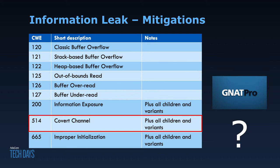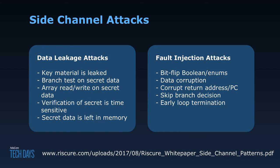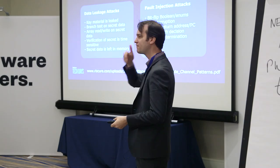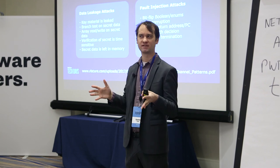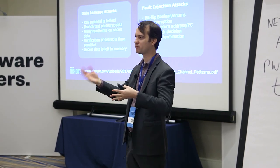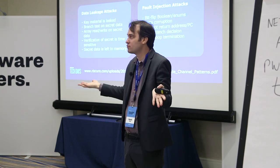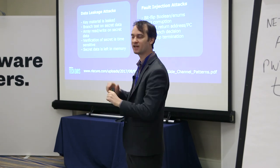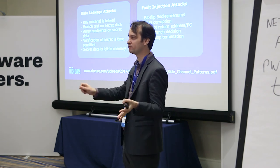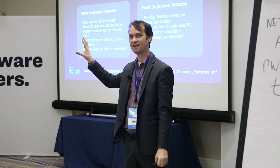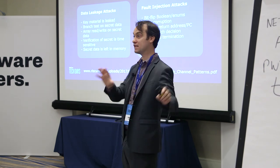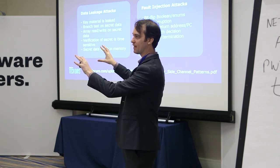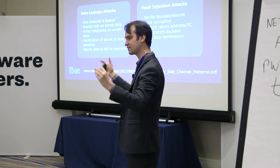Covert channel vulnerabilities — also known as side channels — are more interesting to cover; there are actually two things to consider. The first is data leakage: imagine a subprogram that checks a password. It decodes the password, does some computation, stores it on the stack as a local variable, does the check, then exits. When you exit the subprogram you decrement the stack pointer — that's it — but the memory stays as it was. So without knowing it, you have leaked the password onto the memory of the system, and an attacker could then read and retrieve that password.